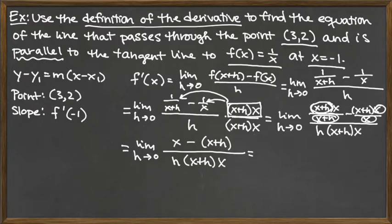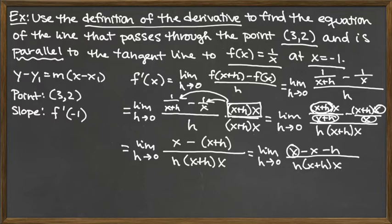We're one step away from being able to cancel my h. I need to get rid of the parentheses on the top, so I'm going to distribute the subtraction sign. When I do that, I've got x - x - h on top, and then the bottom we just copy over. But see, my x - x is going to cancel, leaving me with the limit as h goes to 0. On the top, we've got -h. On the bottom, we've got the copy of h plus a few other factors.